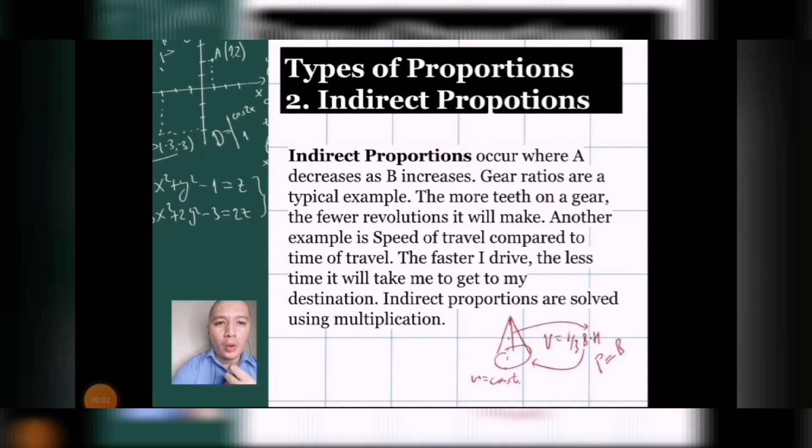The next type of proportion is what we call indirect proportion. It occurs where A decreases as B increases. So, take note. For direct proportion, when one variable increases, the other increases. Vice versa. But for this one, when the variable increases, the other variable decreases. Vice versa.